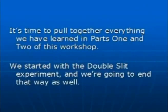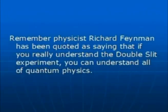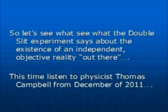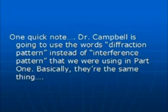It's time to pull together everything we have learned in parts one and two of this workshop series. We started with the double slit experiment, and we're going to end that way as well. Remember, physicist Richard Feynman has been quoted as saying that if you really understand the double slit experiment, you can understand all of quantum physics. So let's see what the double slit experiment says about the existence of an independent objective reality out there. This time, listen to physicist Thomas Campbell from December of 2011. One quick note: Dr. Campbell is going to use the words diffraction pattern instead of interference pattern that we were using in part one. Basically, they're the same thing.